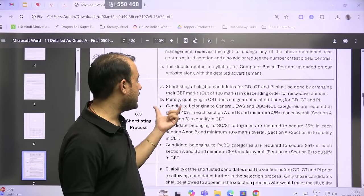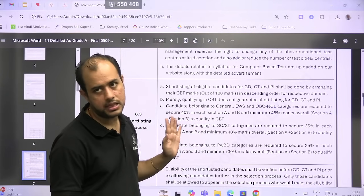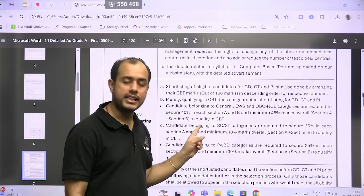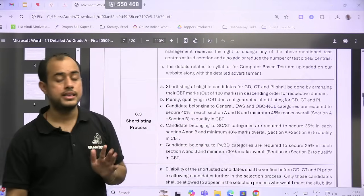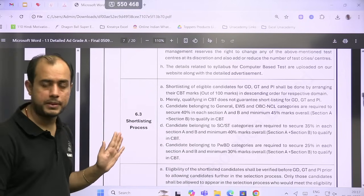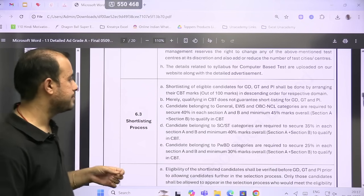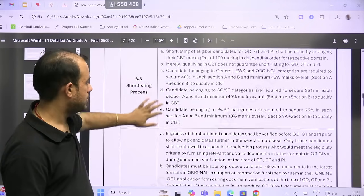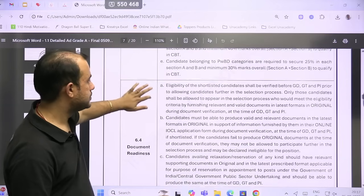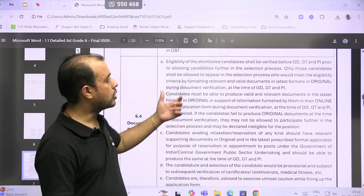So now, 40 percent marks are required in each section—that is, 20 marks as the minimum qualifying marks—but even getting 20 marks in both sections does not guarantee that you will be called for GD or PI. But below 20 marks you will be disqualified.